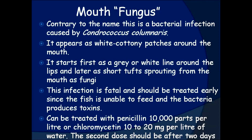Mouth fungus. Contrary to the name, this is a bacterial infection caused by Chondrococcus columnaris. It appears as white cottony patches around the mouth. It starts first as a gray or white line around the lips, and later as short tufts sprouting from the mouth resembling fungi. This infection is fatal and should be treated early, since the fish is unable to feed and the bacteria produce toxins. Can be treated with penicillin at 10,000 units per liter or chloromycetin at 10 to 20 milligrams per liter of water. The second dose should be after two days.